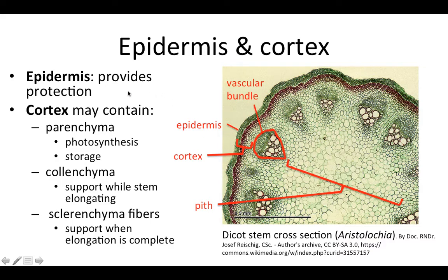The epidermis provides protection. It is going to reduce water loss, and it is also going to be a barrier to stop things like herbivores or fungi or bacteria from getting into the plant. Remember that the epidermis makes a layer of cutin and wax that will help to waterproof it.